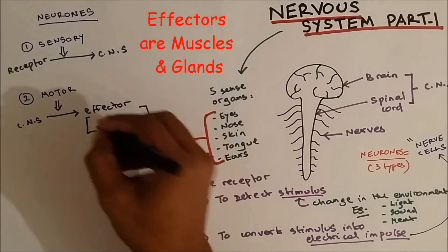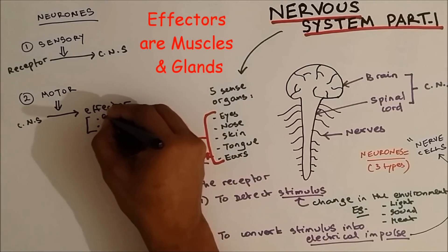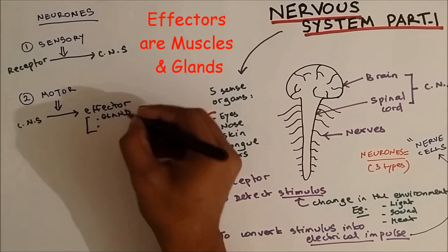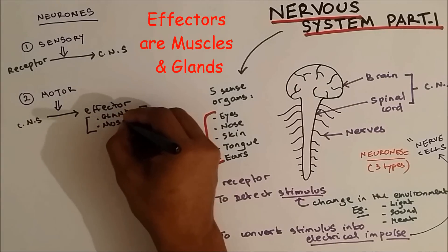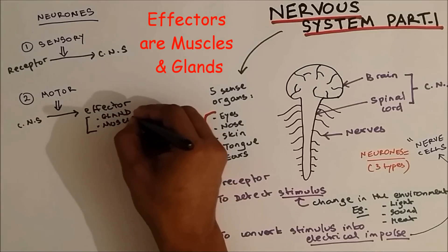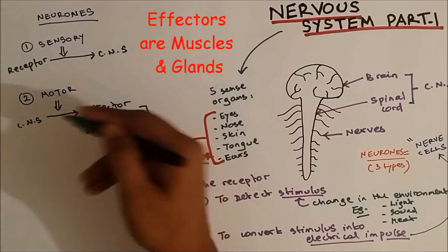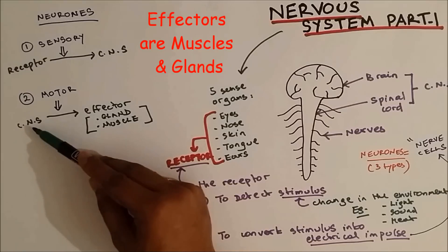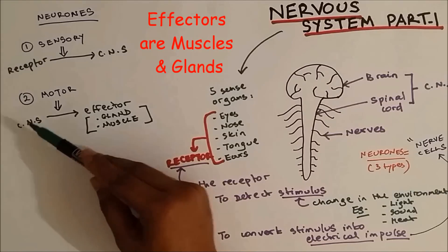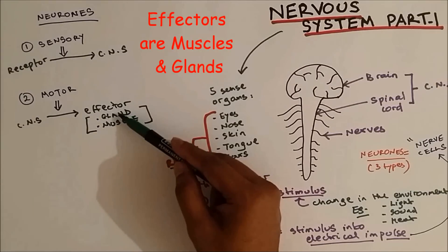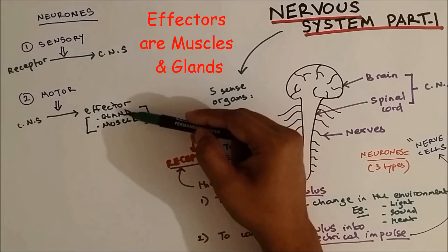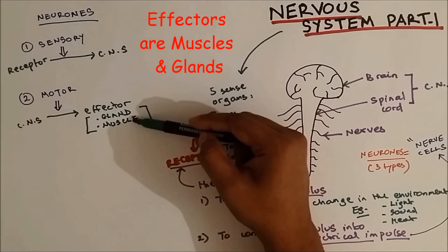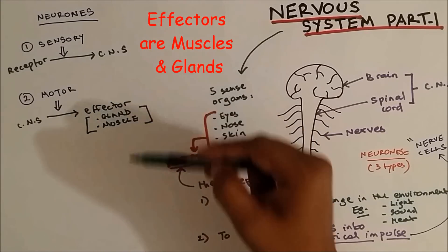What are effectors? The effectors are either glands or muscles. So motor neurons carry electrical impulse from the central nervous system to the gland or muscle. The gland will start to produce hormones and the muscle will cause movement.